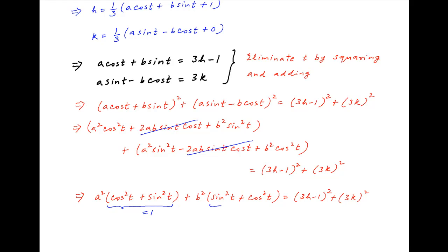Recall that cos²(t) + sin²(t) = 1. Therefore, the above equation simplifies to (3h − 1)² + (3k)² = a² + b².